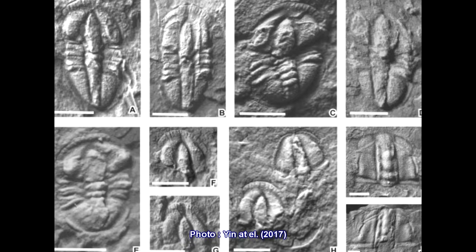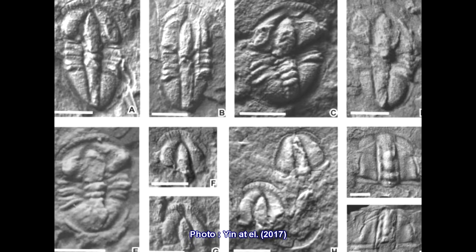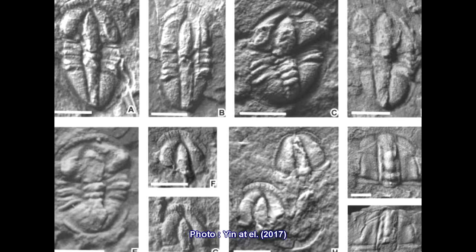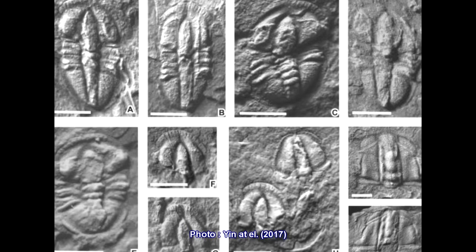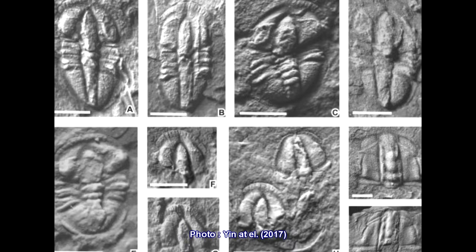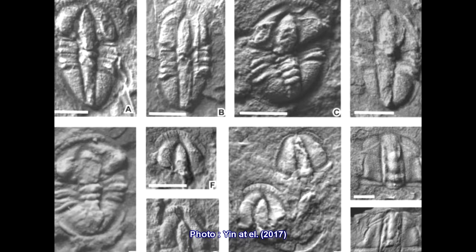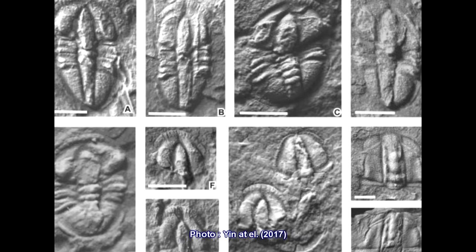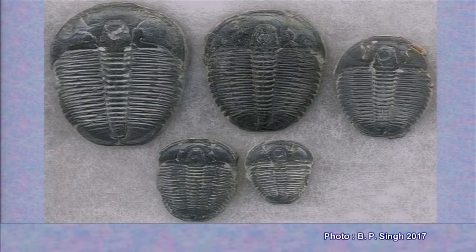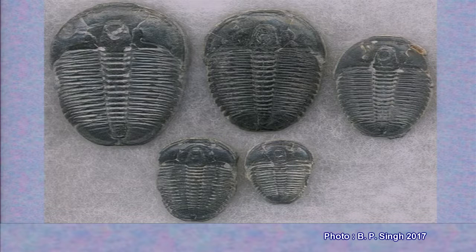Here some trilobite fossils are being shown. The age ranges from Cambrian to Permian — at the end of Permian they became extinct. The fossils of Paradoxides, Calamine, Philipsia, and Olenus can be identified.